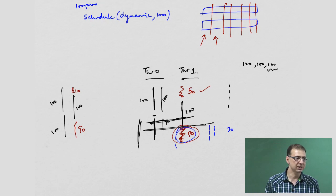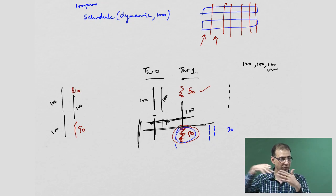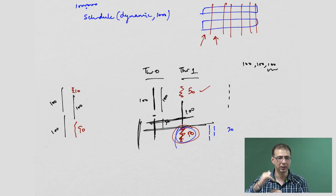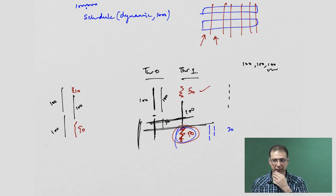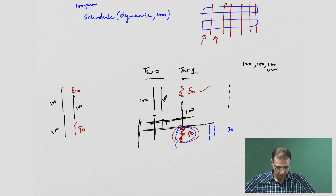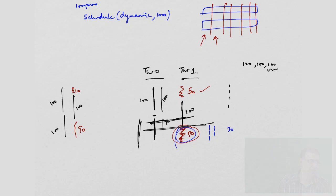With bigger chunk sizes, whichever thread gets scheduled last leaves the others waiting — the wait time can be as long as that entire chunk. With smaller chunk sizes, the remaining work gets load-balanced and everyone can share it. But again, you do not want to make chunk sizes too small, because then scheduling overheads become significant.